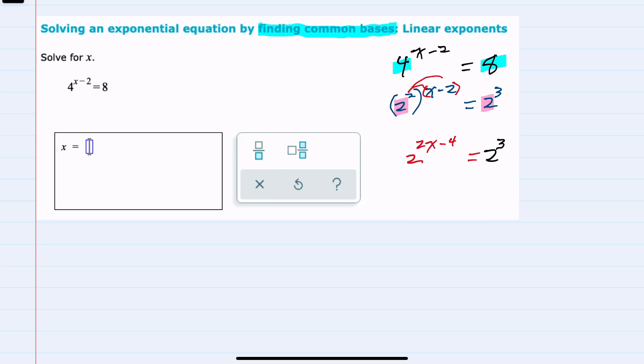And from here, when we have the same base on both the left hand side and the right hand side, we can drop that base and move forward with just the exponents. So that would mean that 2x minus 4 would have to equal 3 on the right hand side.